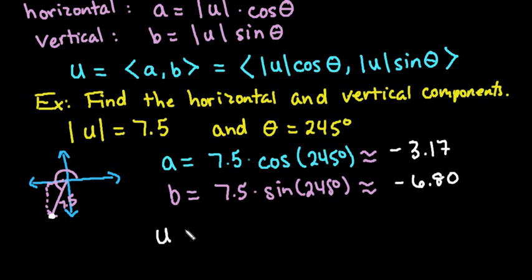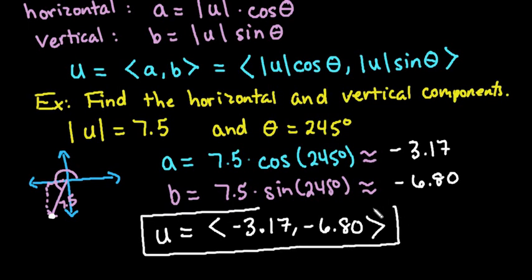So we can say that vector u is equal to the terminal points negative 3.17 comma negative 6.80. So this gives me the horizontal and vertical components of my vector, or basically my terminal point for my vector.